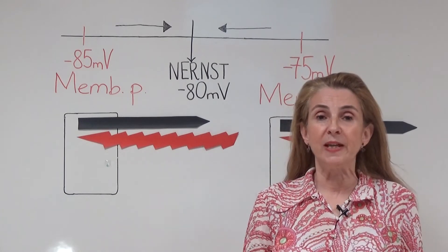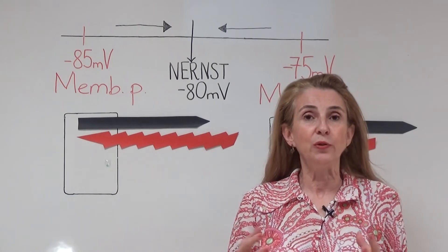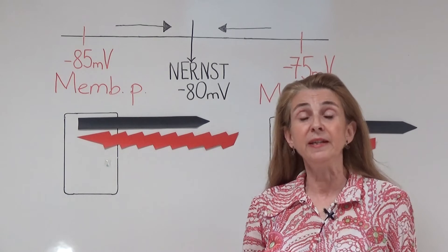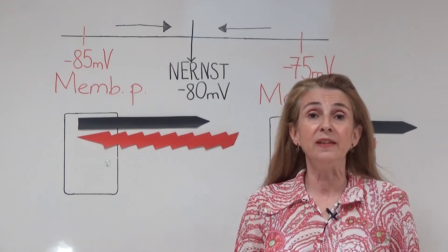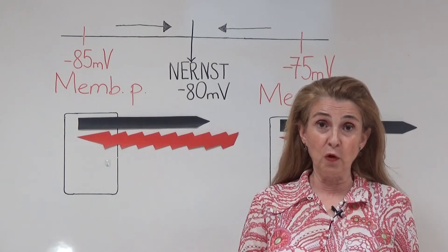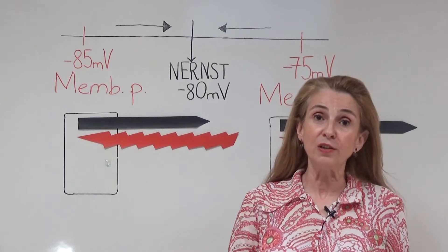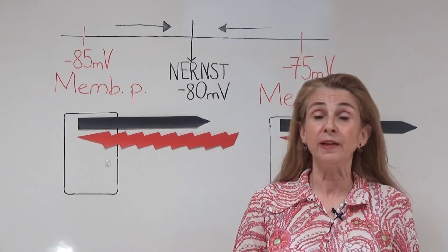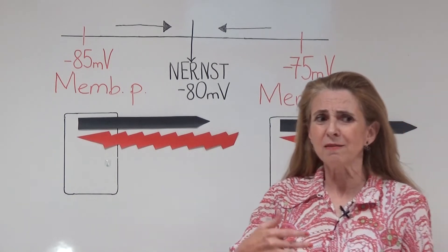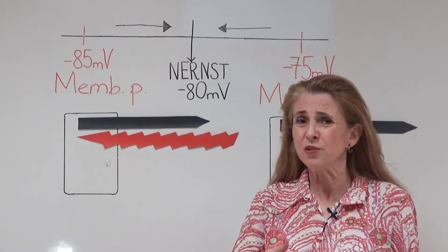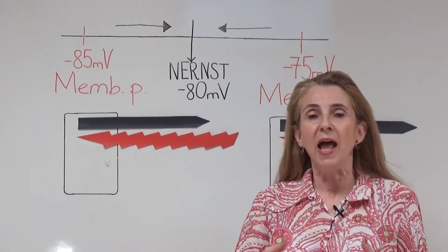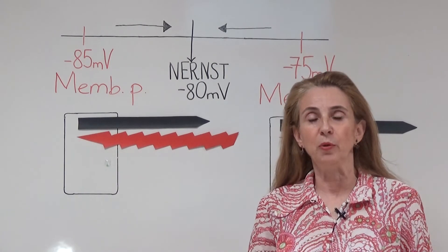How do we use them? We use the membrane potential and the Nernst potential to calculate the net electrochemical force. When we find the net electrochemical force, its direction tells us the direction of ion movement that is going to take place. The ions try to equalize the Nernst potential and the membrane potential.